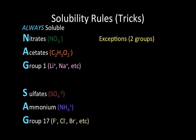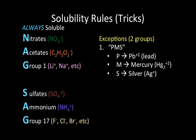Even though I told you that these molecules are always soluble, there are two specific groups that are exceptions. The first group I like to call PMS. The P stands for lead, Pb²⁺. The M stands for mercury, diatomic mercury, Hg2²⁺. The S for silver, Ag⁺. I'm going to put a magenta asterisk next to PMS, and next to the sulfates and group 17 non-metals, because PMS is never soluble with sulfates or group 17 non-metals.